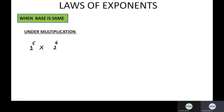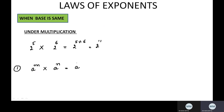If I multiply them, how can I solve? The base is same and they are getting multiplied, so I can add their powers: 5 plus 6. This is the first rule. In general, if you have a raised to the power m and a raised to the power n with the same base a, and if they are multiplying, we can add their powers: a^m × a^n = a^(m+n).